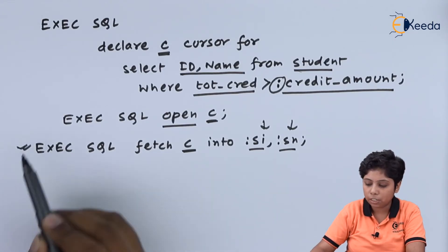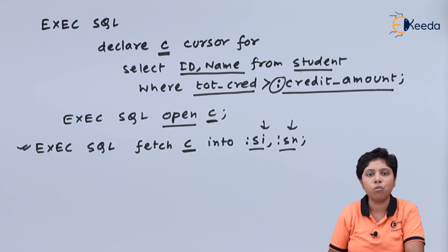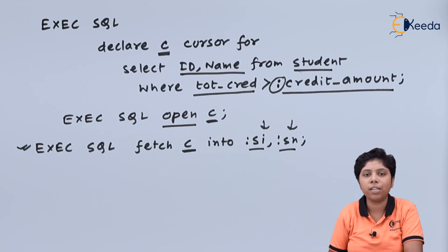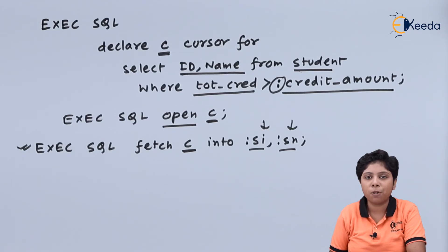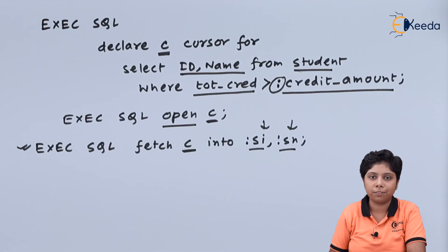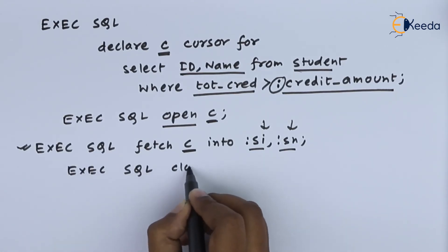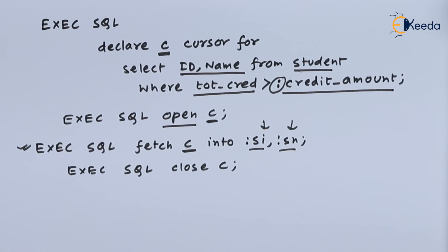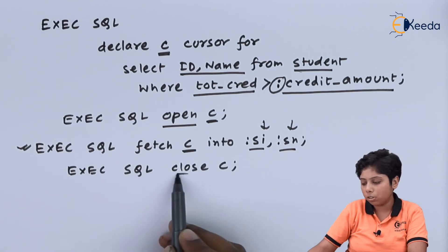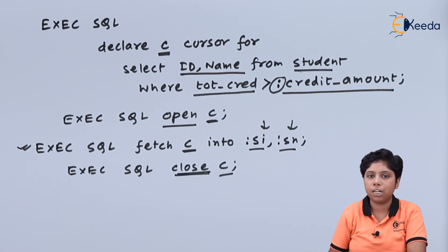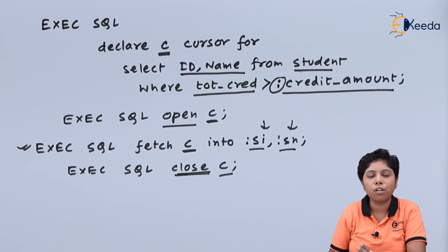That is the basic use of fetching a value from a cursor and storing it in a variable of the host language. After the cursor has performed its operations, we can close it using the close command. Using the close command we close cursor C so that it cannot be used further for doing any operations on the relation student.